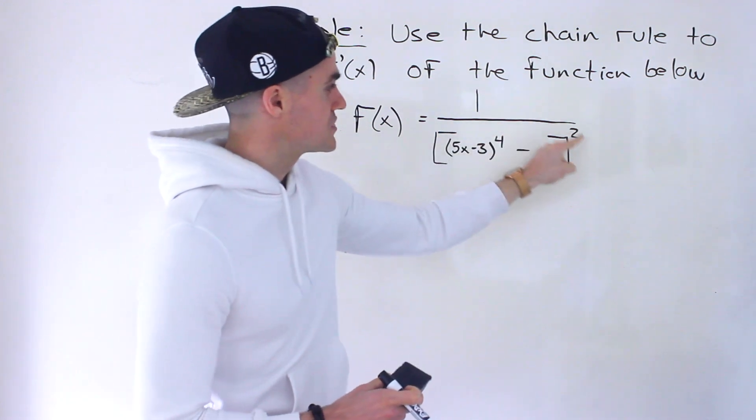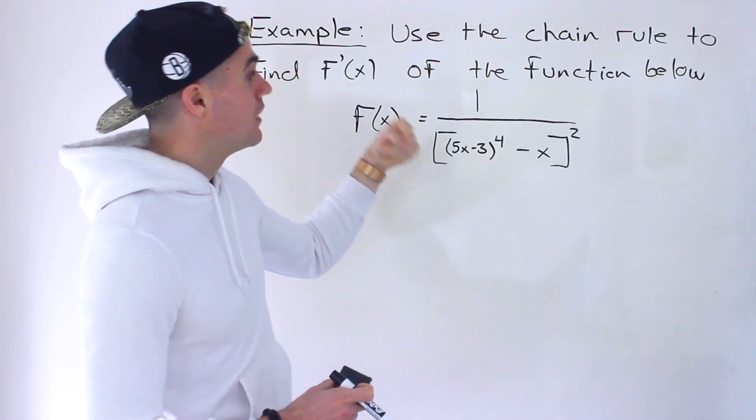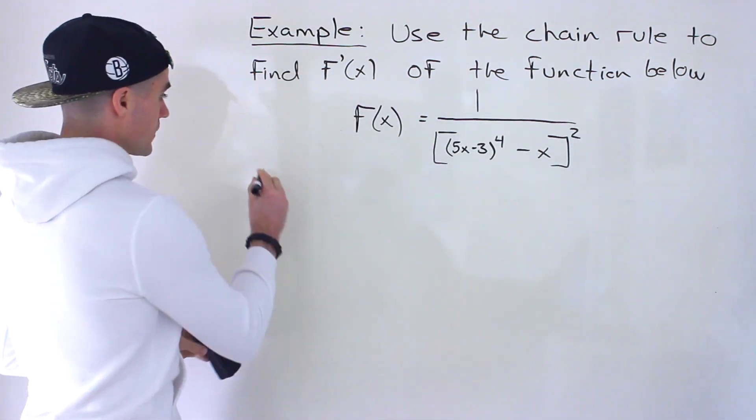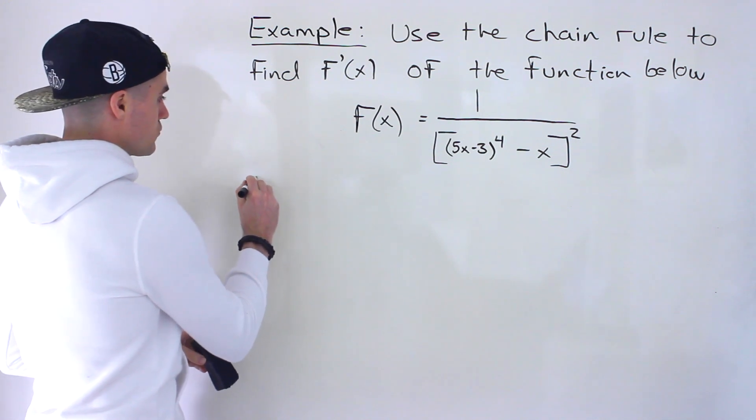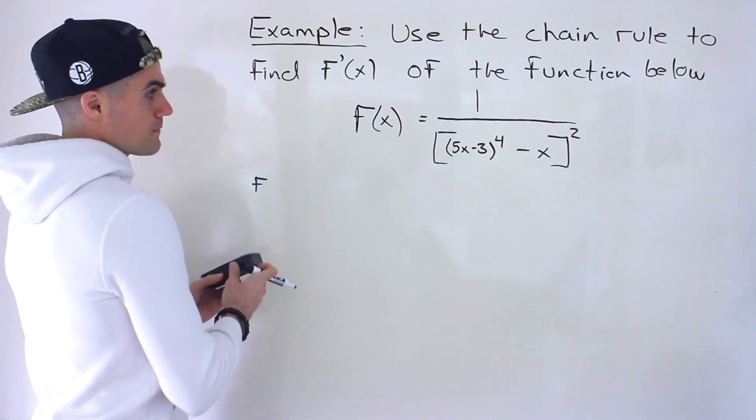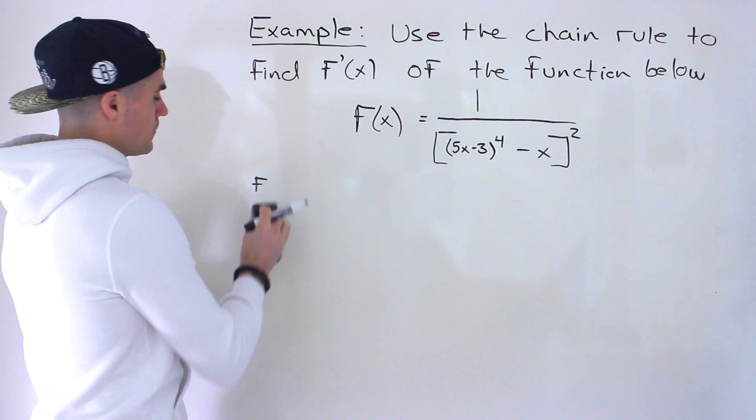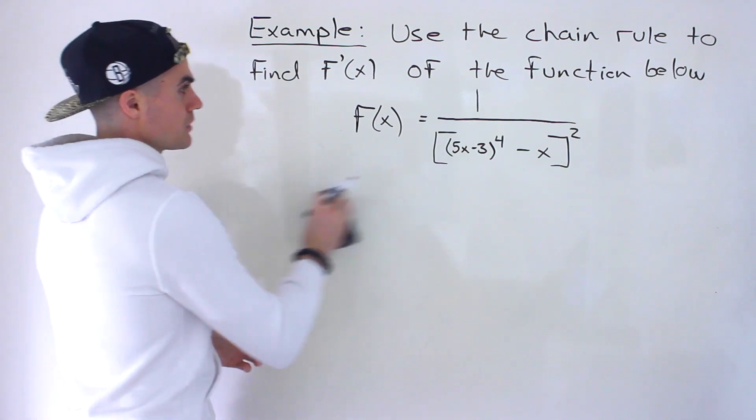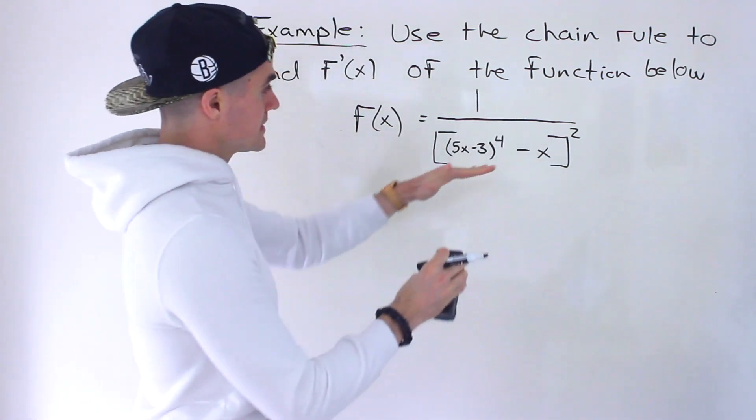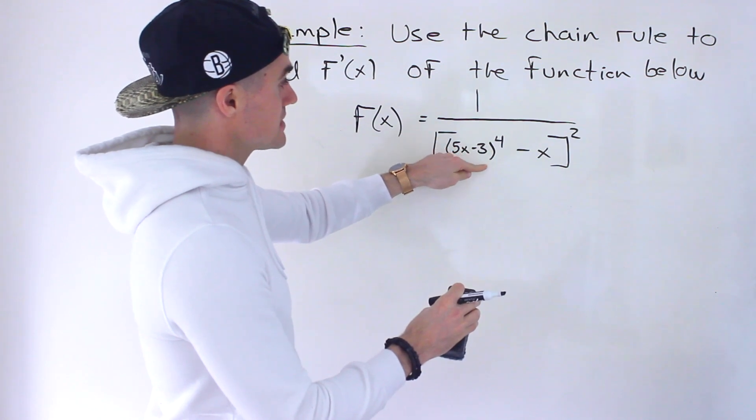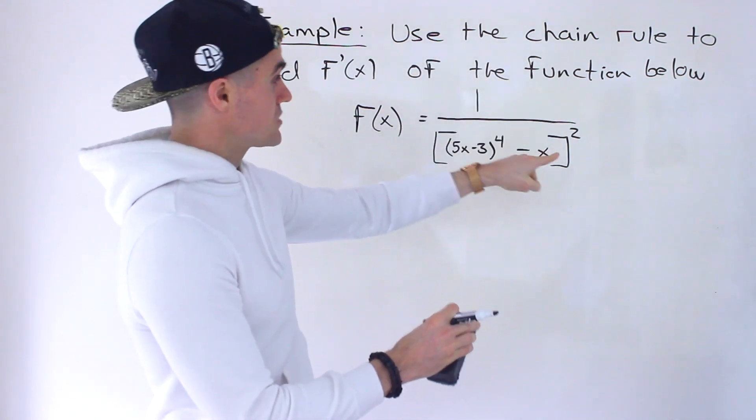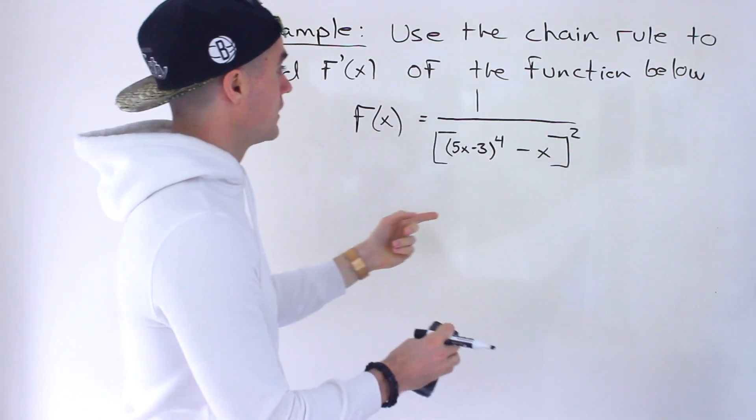So what I'm going to do is actually rewrite it. Let's actually rewrite it over here. So I'm just going to take this, bring it up, and so that exponent would turn negative.